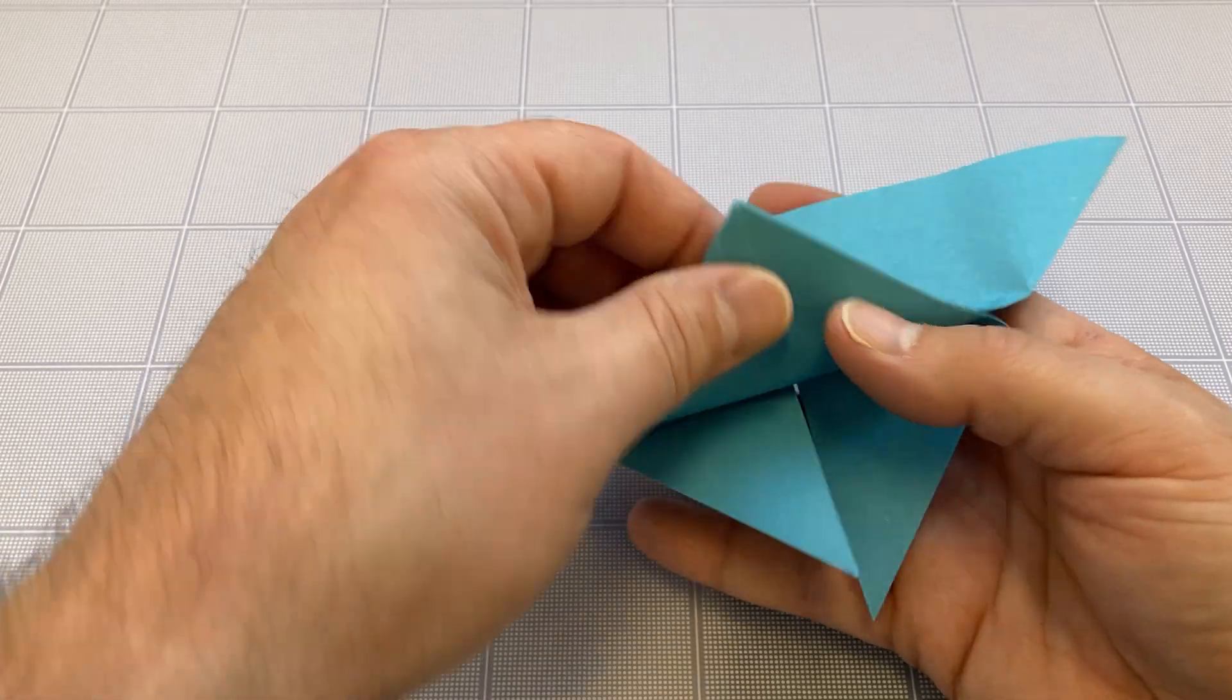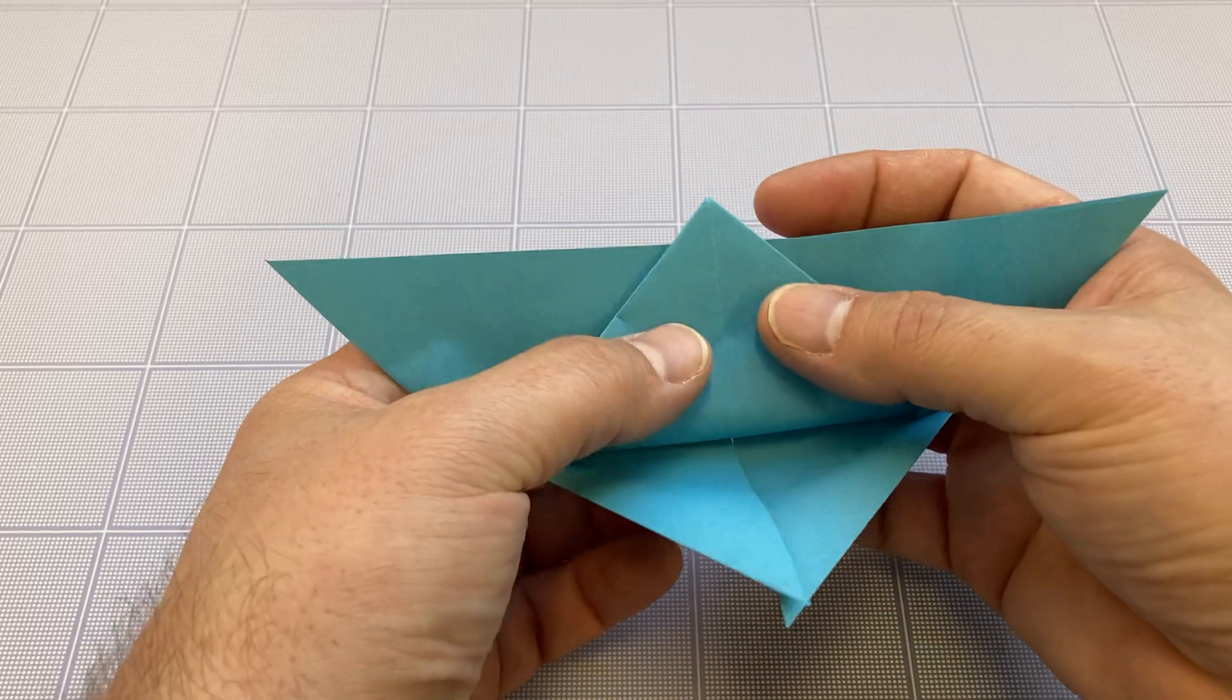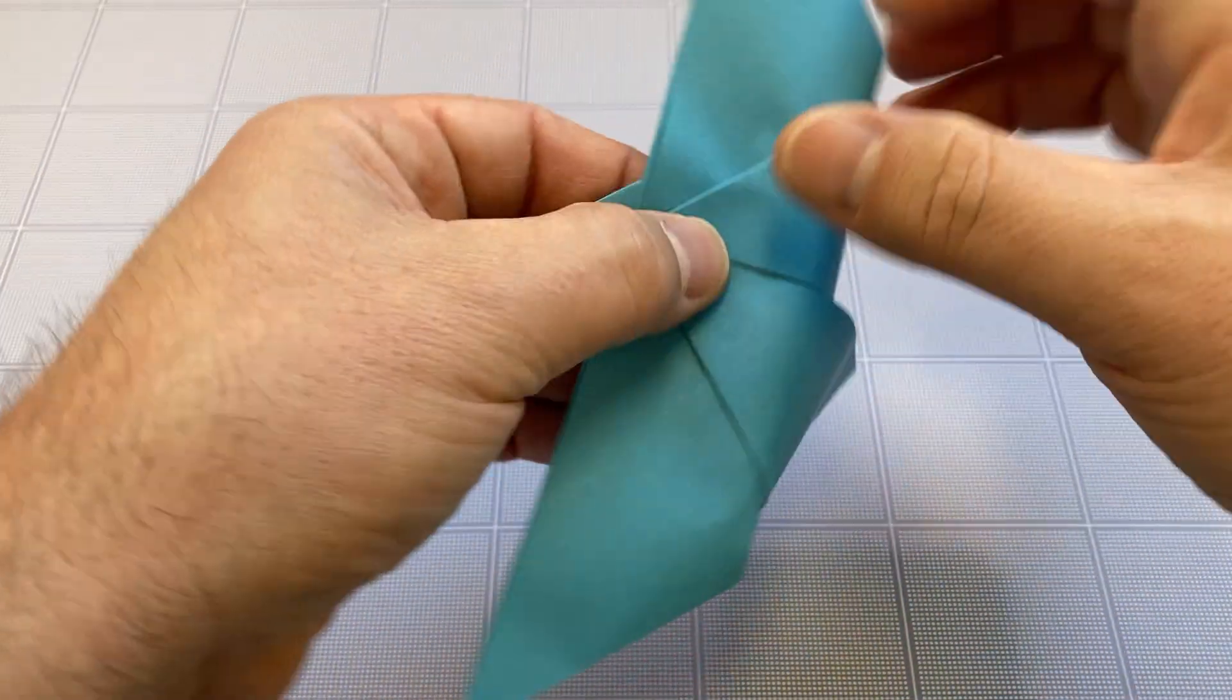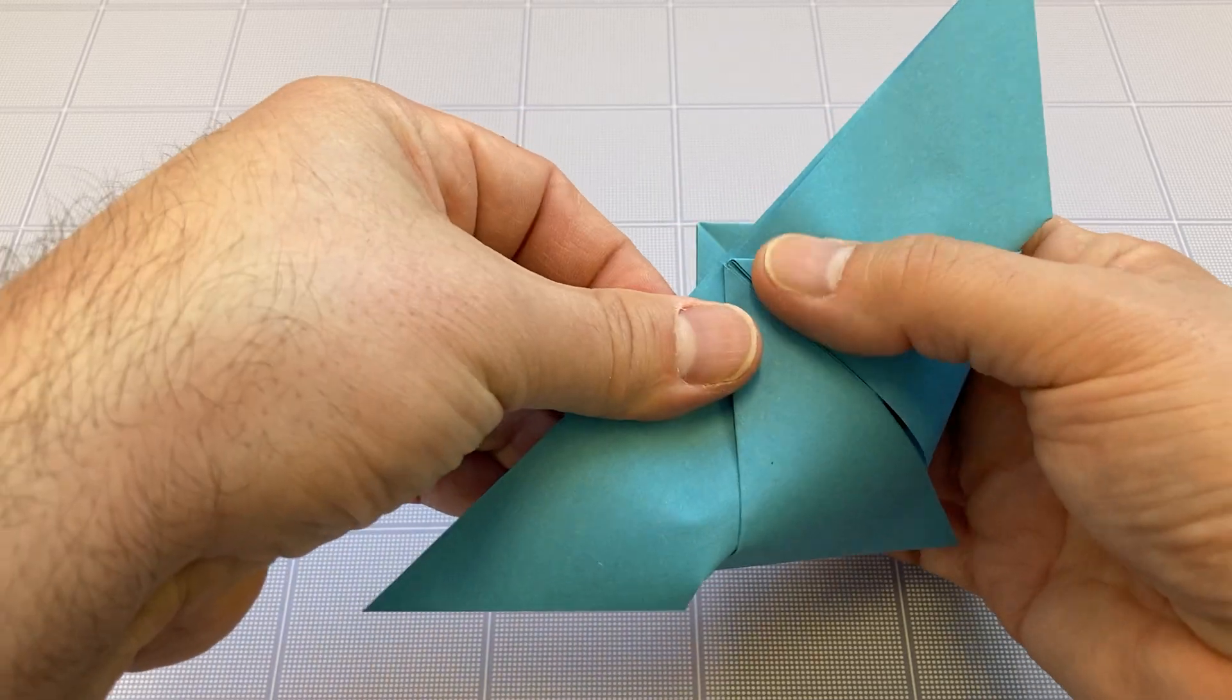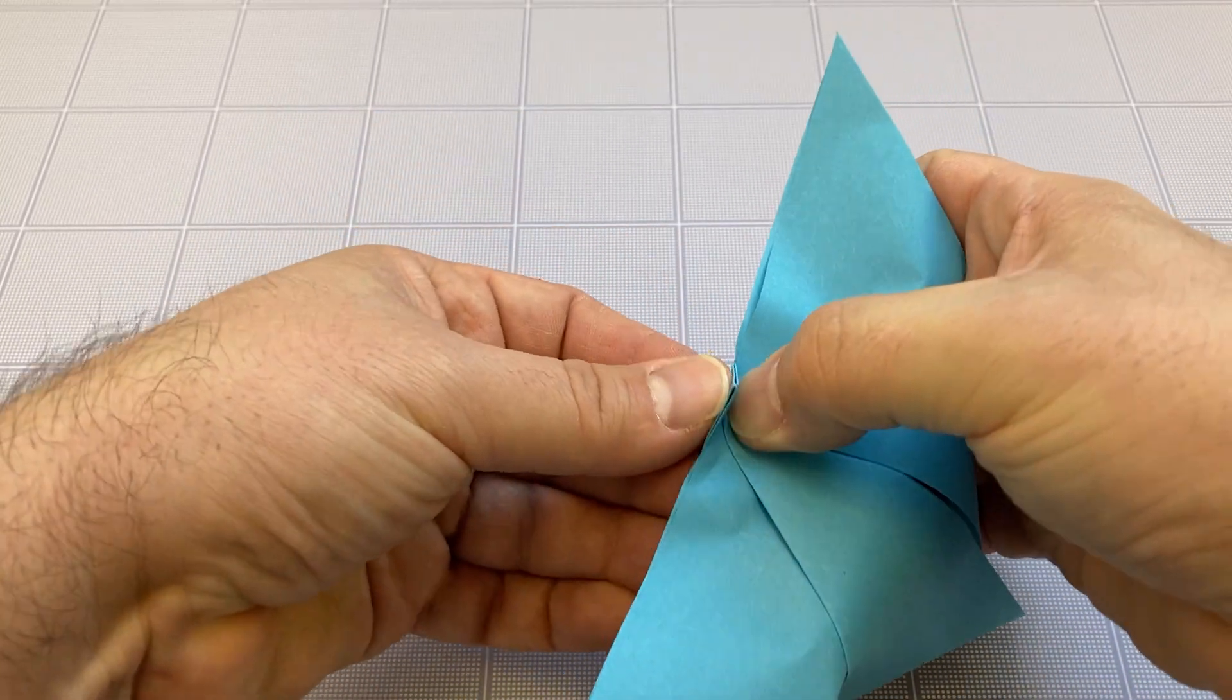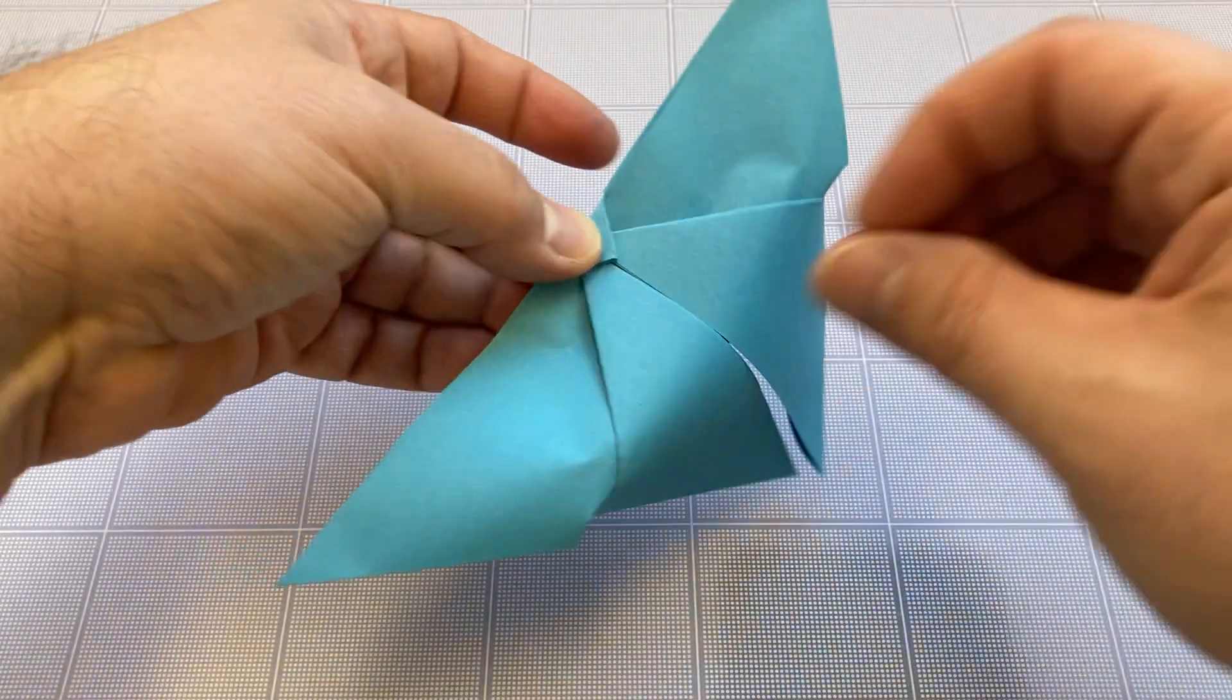Bring it up gently such that it extends past this top edge. Fold this over and that will help lock this in place.